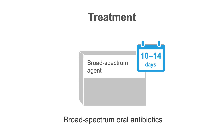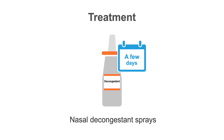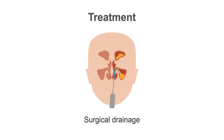The usual treatment for acute sinusitis is broad-spectrum oral antibiotics for 10 to 14 days to treat the bacterial infection. Use local agents such as nasal decongestant sprays, which can reduce nasal tissue swelling, or oral decongestants. The sprays should only be used for a few days to reduce rebound edema and swelling. Surgical drainage may be necessary for refractory cases.